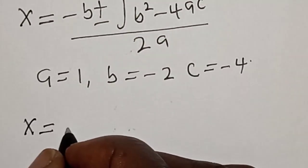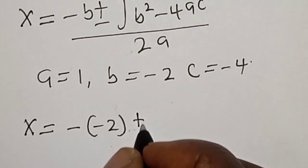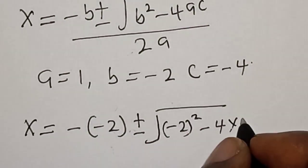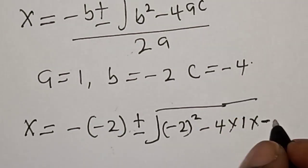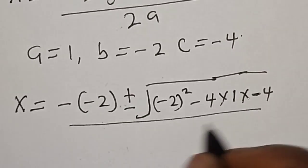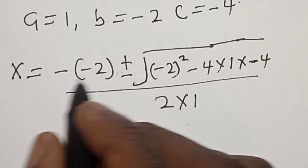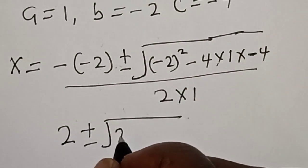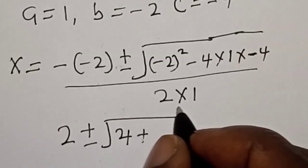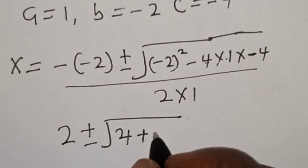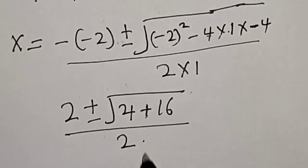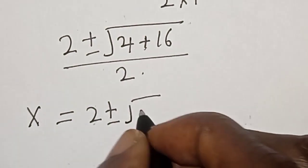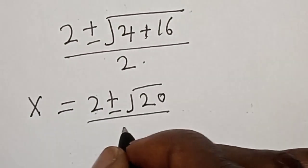Substituting: s equals minus times minus 2, plus or minus square root of minus 2 squared minus 4 times 1 times minus 4, divided by 2 times 1. This gives 2 plus or minus square root of 4 plus 16, divided by 2. So s equals 2 plus or minus square root of 20, divided by 2.